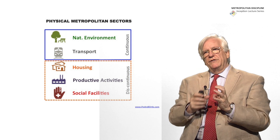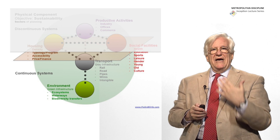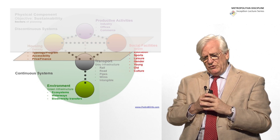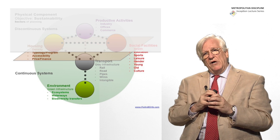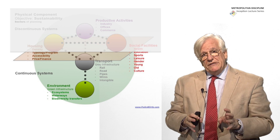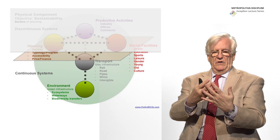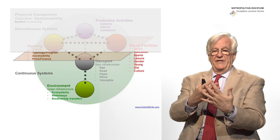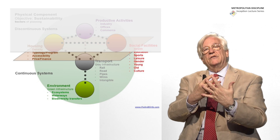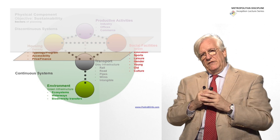So we have two continuous systems, which are environment and transport, and we have three discontinuous systems, which are housing, productive activities — industries, commerce, and offices — and social facilities. The more difficult ones, the ones by which you have to start planning and thinking about the metropolis, are the continuous ones. Because obviously when you have a continuous system imposed over territory with another continuous system, they are going to conflict and they are going to break that continuity.